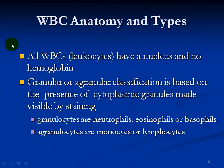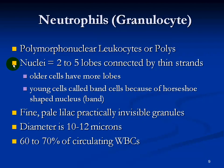White blood cell anatomy and types: all white blood cells have a nucleus but no hemoglobin. They can be either granular or agranular based on the presence of cytoplasmic granules. The granulocytes are the phils — neutrophil, eosinophil, and basophil. The agranular ones are either monocytes or lymphocytes.